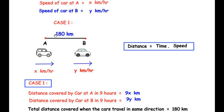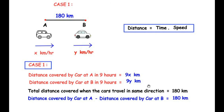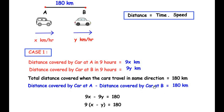The total distance to be covered is 180 kilometers. Since they are moving in the same direction, the car at place B goes beyond 180 kilometers, so we subtract the distance covered by car B from the distance covered by car A. The total distance covered when cars travel in the same direction is 180 kilometers, giving us: 9x minus 9y equals 180.